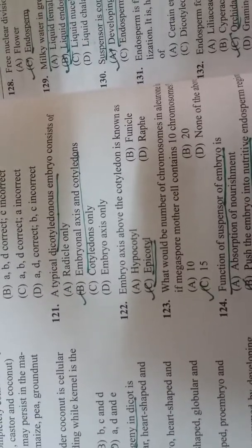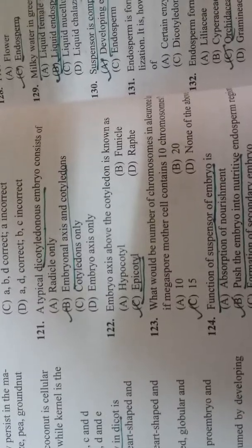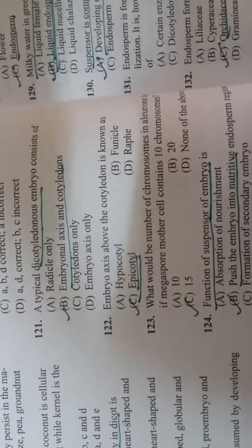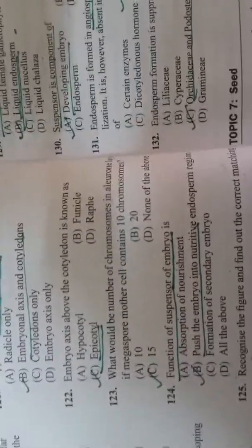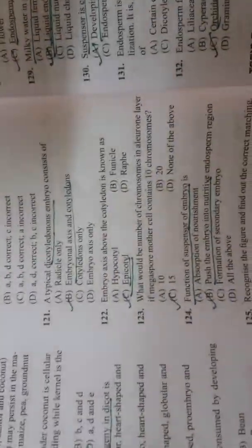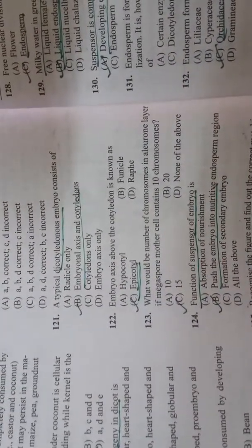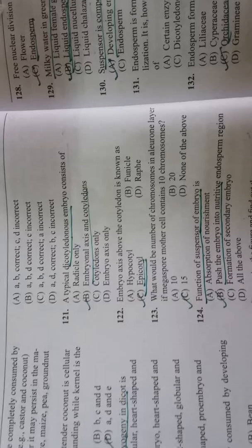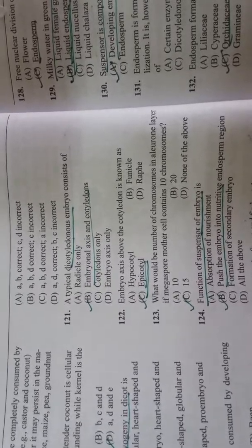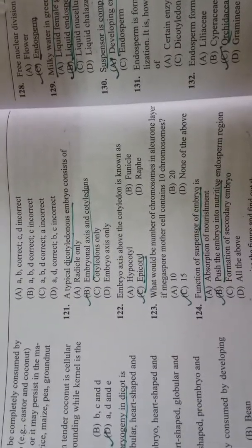Embryonal axis above the cotyledon is known as epicotyl. What would be the number of chromosomes in the aleurone layer if megaspore mother cell contains 10 chromosomes? 15. Function of suspensor of embryo is to push the embryo into nutritive endosperm region.